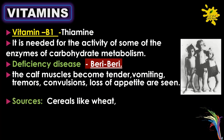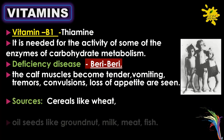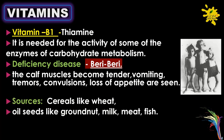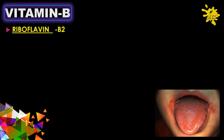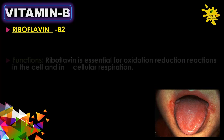Sources of Vitamin B1 include cereals like wheat, oil seeds like groundnut, milk, meat, and fish. Vitamin B2 is riboflavin.